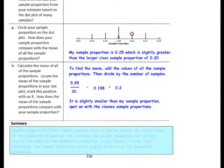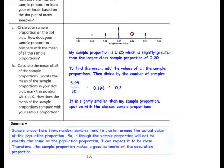In this lesson you have learned that sample proportions from random samples tend to cluster around the actual value of the population proportion. So although the sample proportion will not be exactly the same as the population proportion, you can expect it to be close. Therefore, the sample proportion makes a good estimate of the population proportion.